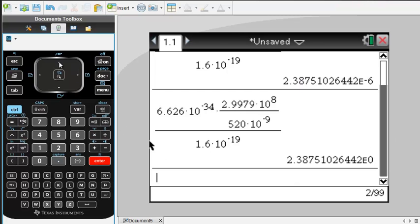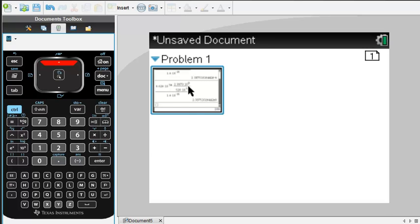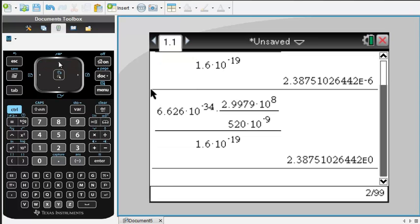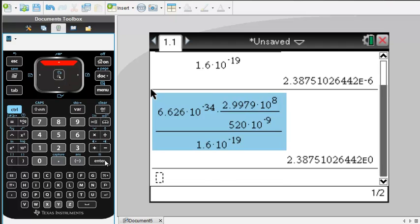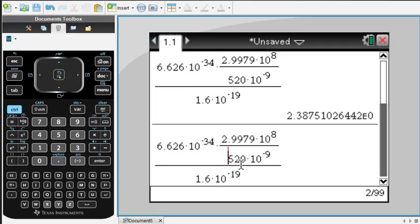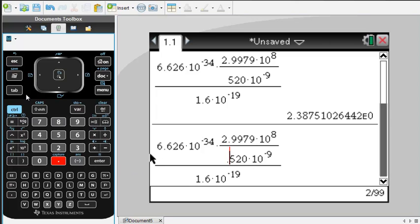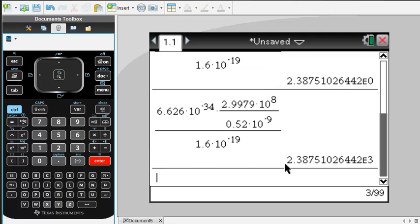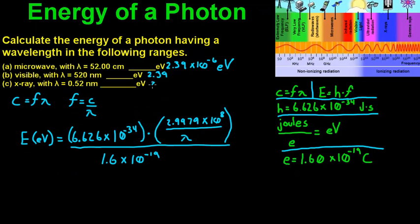Let's verify. All we're going to do is change this to a 0.52, and that is going to leave us with, what do you know, 2.39 times 10 to the third. So 2.39 times 10 to the third electron volts. And that's how you solve that problem, pretty simple.